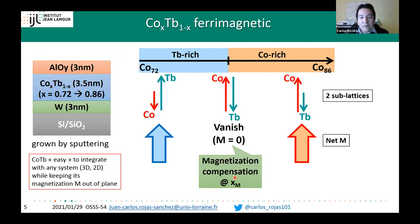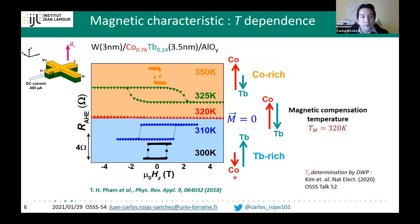Experimentally, we can determine the magnetization compensation temperature using a Hall bar: we sweep the perpendicular field and normalize the transverse voltage over charge current to get the anomalous Hall effect resistance. Over several cycles between 300 K and 350 K, we observe a sign change of the field-induced switching around 320 K. This sign change is the main feature used to determine the magnetic compensation temperature, which in our sample is about 320 K.